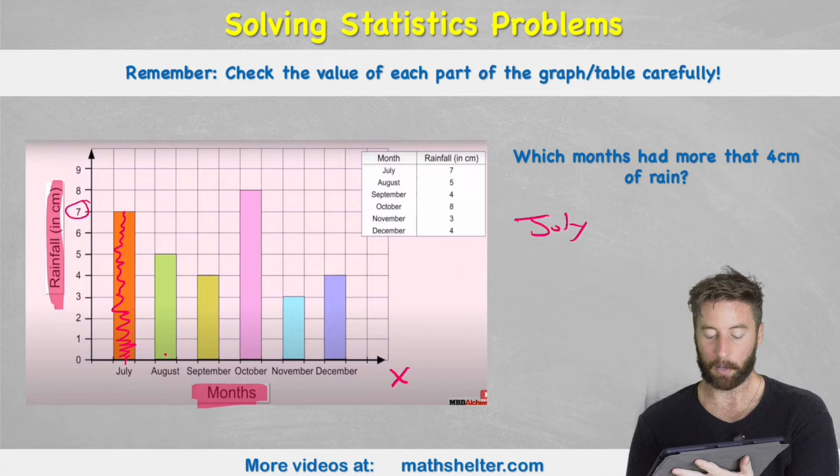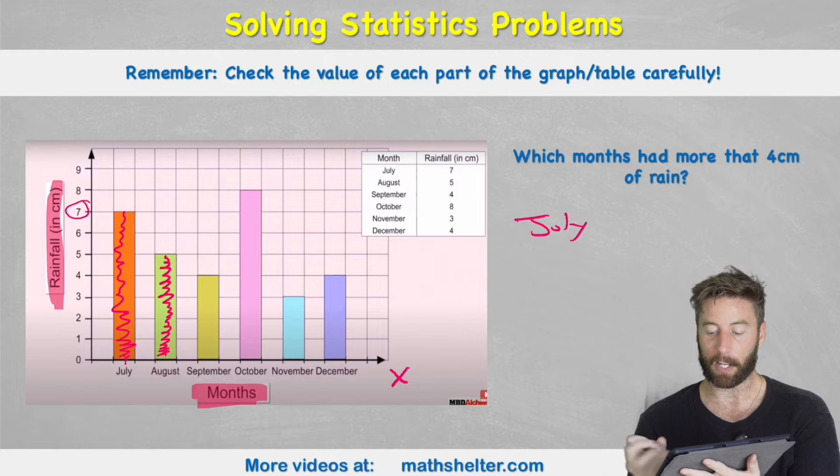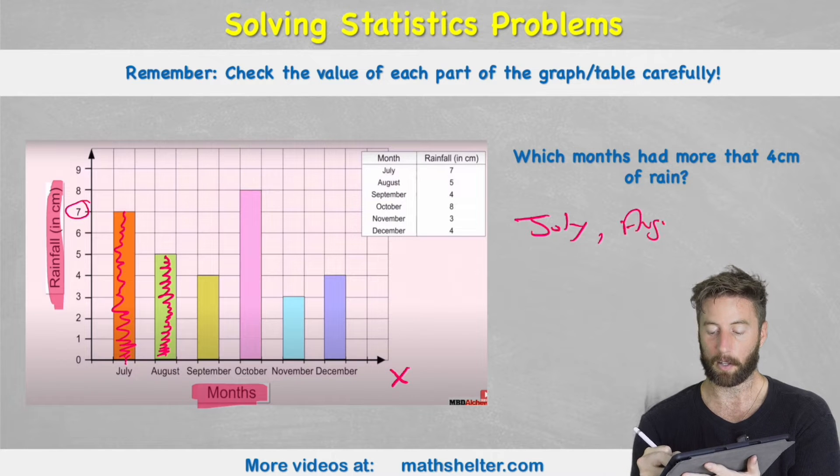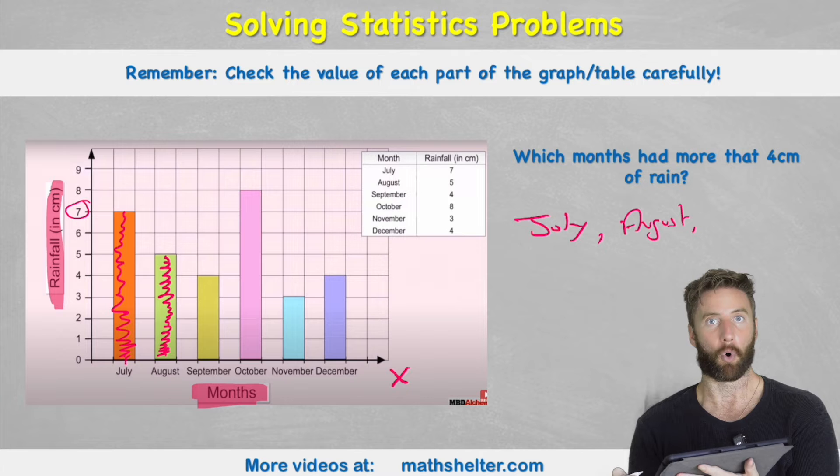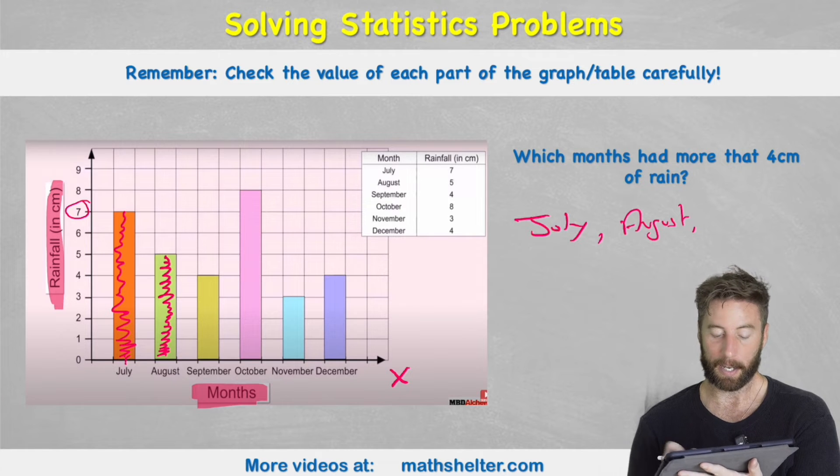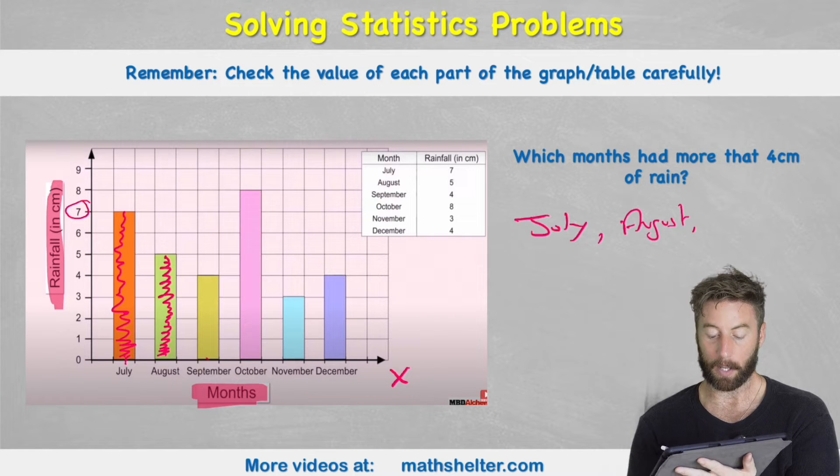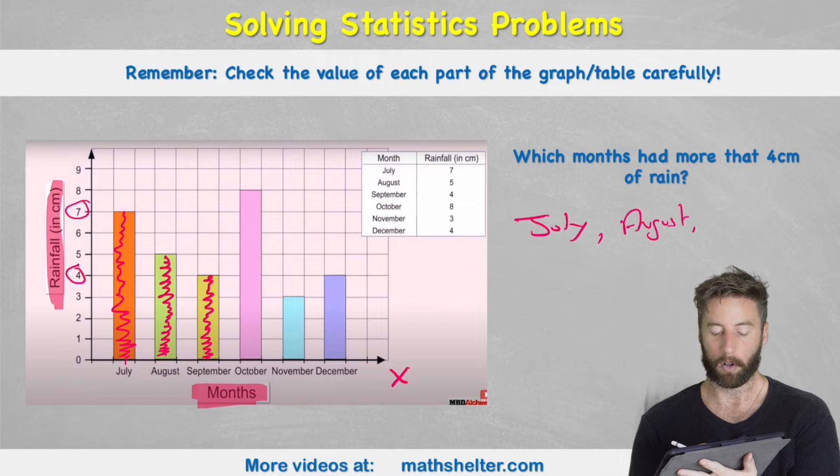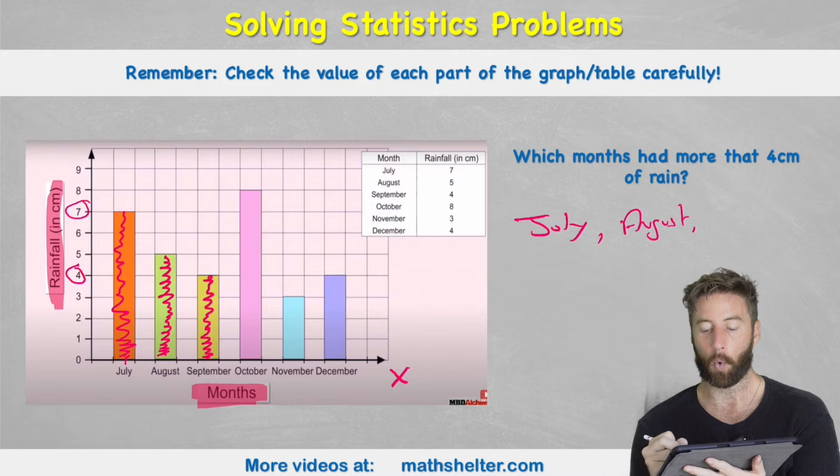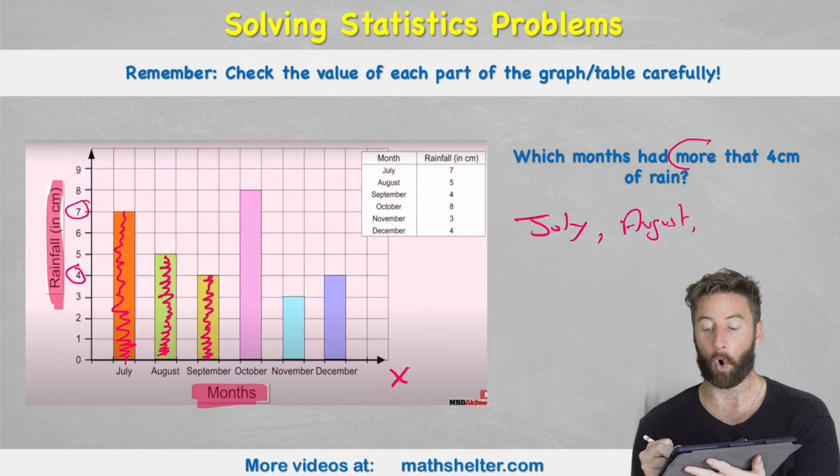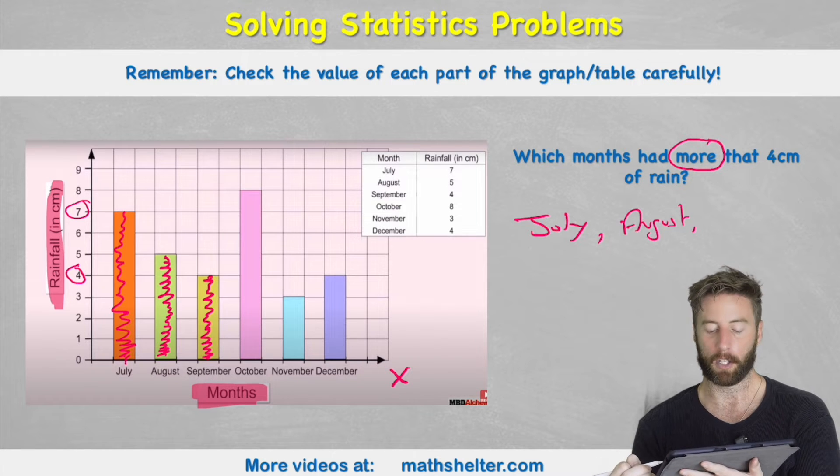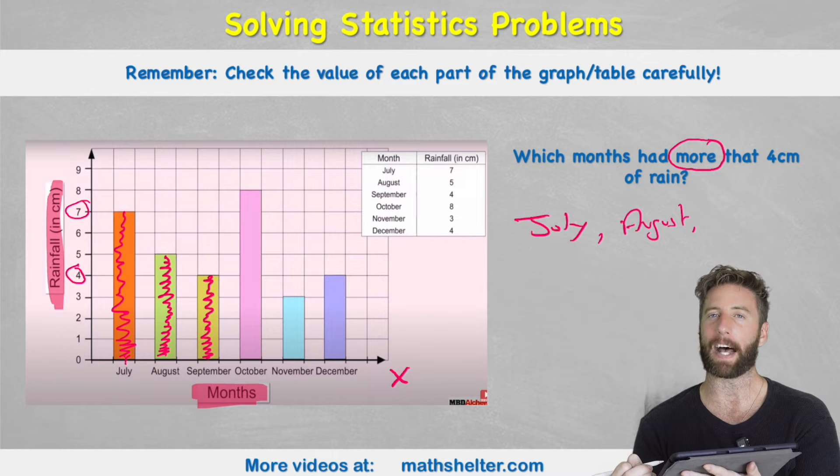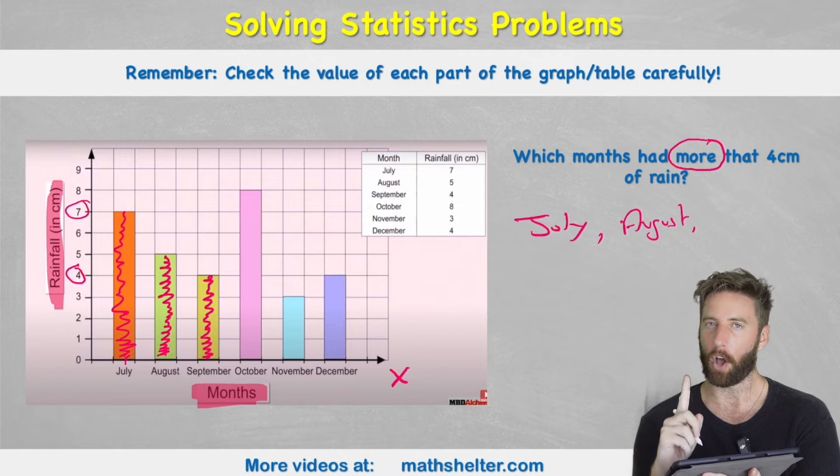Let's look at August. If we come up the bar we can see we get all the way to five centimeters. So August also has more than four centimeters. Now let's look at September. So September comes all the way up to four. Well my question says which months had more than four. So does September have more than four if it has exactly four? No.